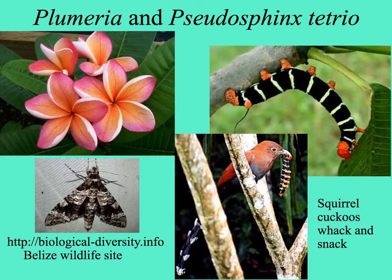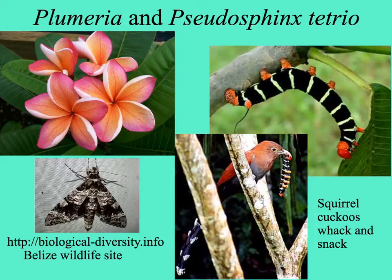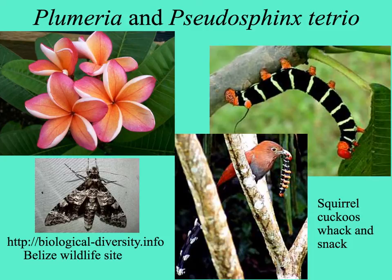Plumeria, native to the Caribbean and cultivated in Hawaii for making leis, has leaves eaten by Pseudo-Sphinx tetrio, a moth whose caterpillar may reach 10 inches long — sometimes called a coral snake mimic. The adult moth is quite large. These caterpillars are toxic and most enemies won't eat them, but certain animals like the squirrel cuckoo have adapted by whacking the caterpillar until its poisonous gut contents come out, then eating what's left.